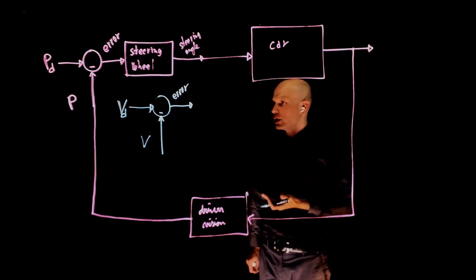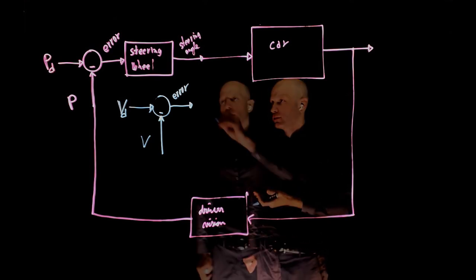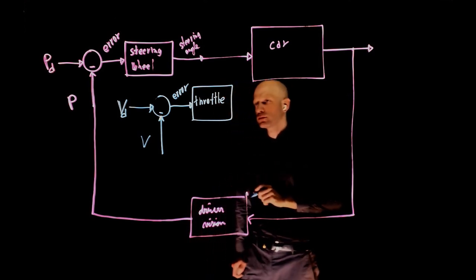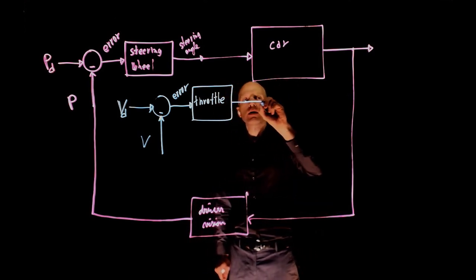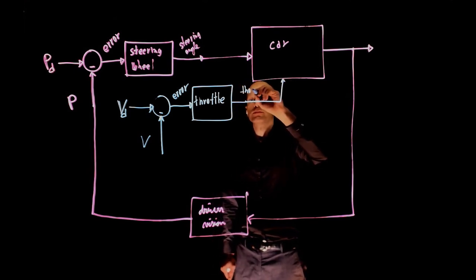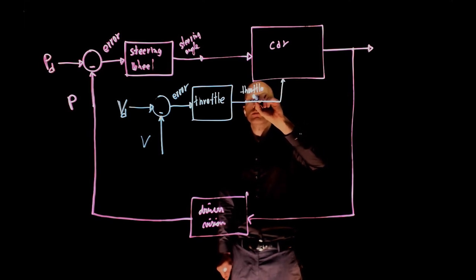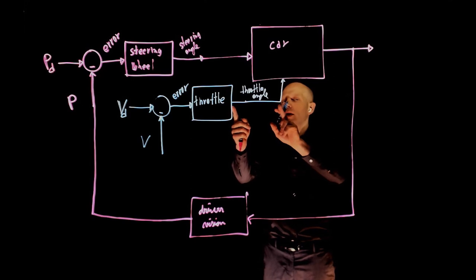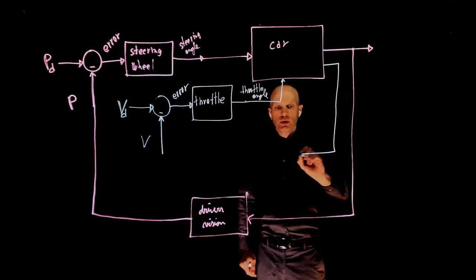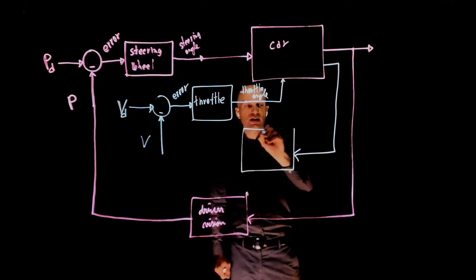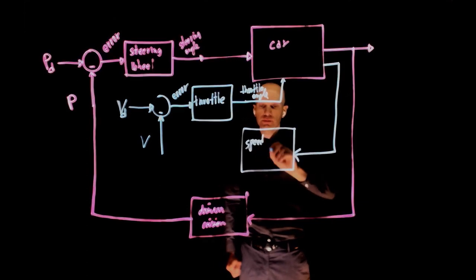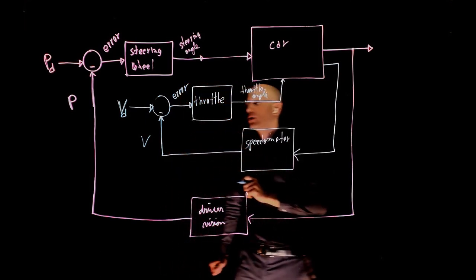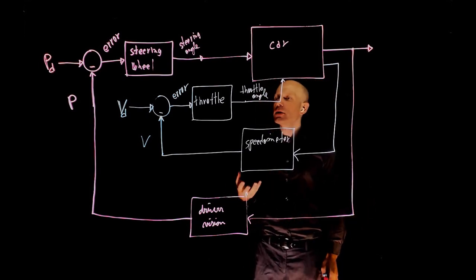What do we do now to correct the speed? We use an actuator, and the actuator in this case is the throttle. We now give this error to the throttle. This is converted into a throttle angle. And the throttle angle is now sent to the car. The car now responds to this command — the speed of the car will change — and now I have to measure the speed, so here we need a sensor. This is a speedometer, and the speedometer now gives the current speed.